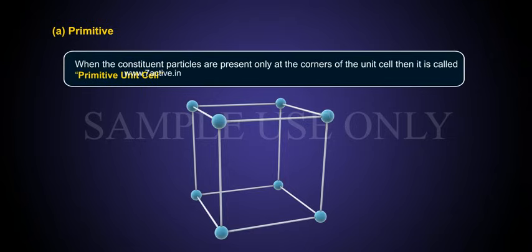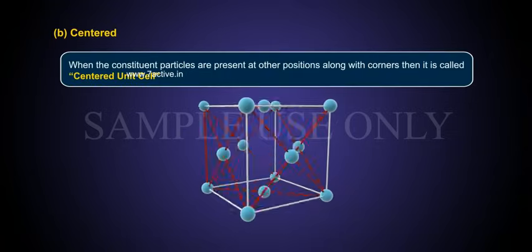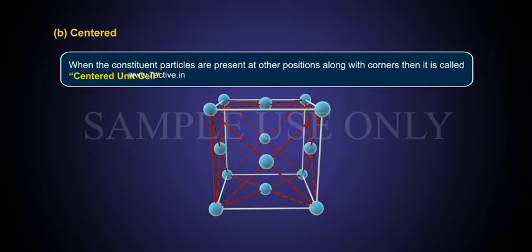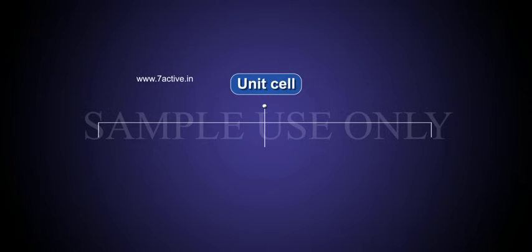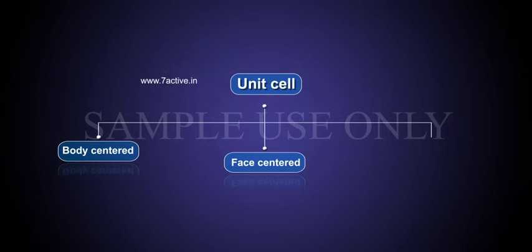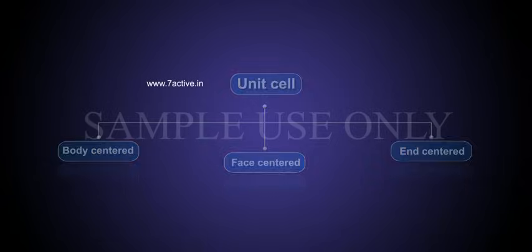When the constituent particles are present at other positions along with corners, then it is called centered unit cell. It's again of three types: body centered, face centered, and end centered.